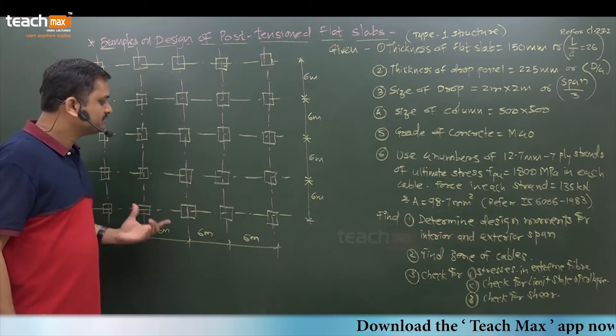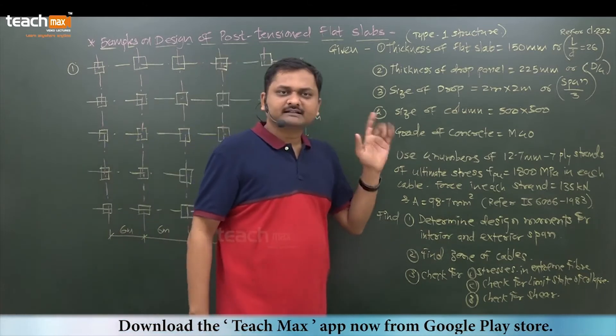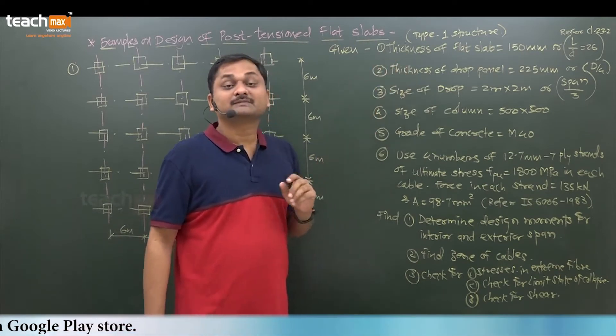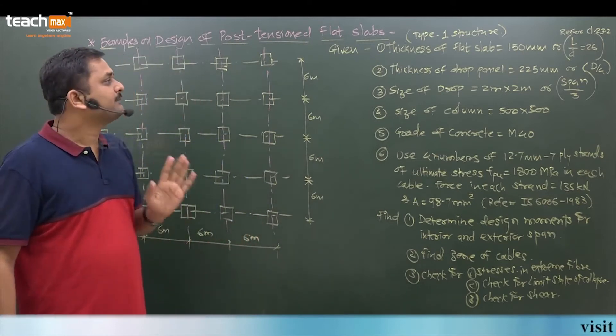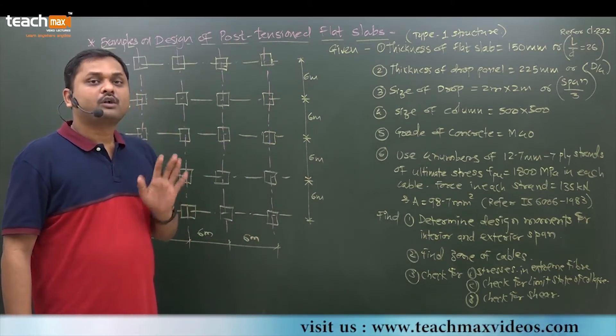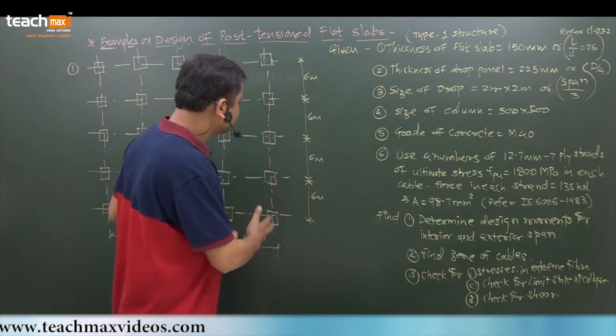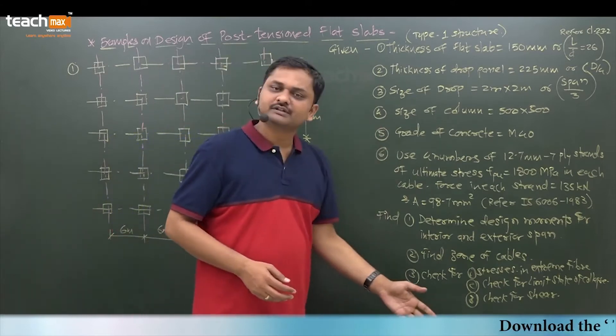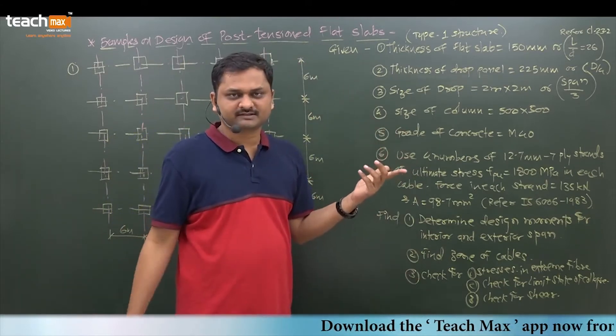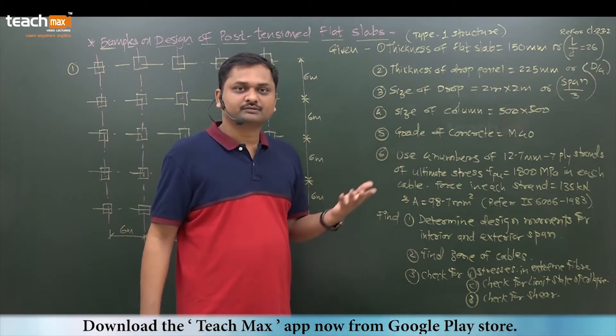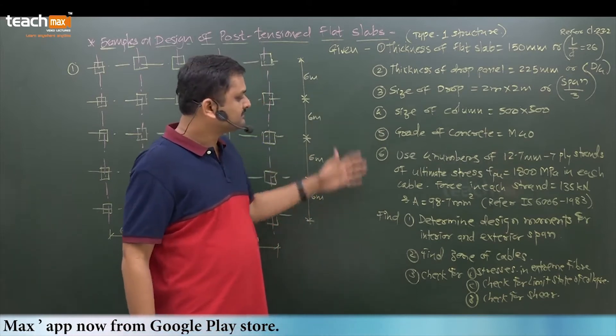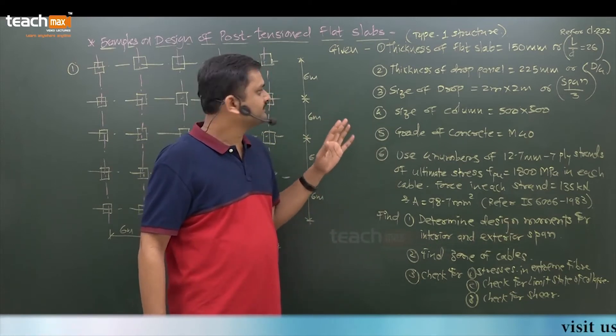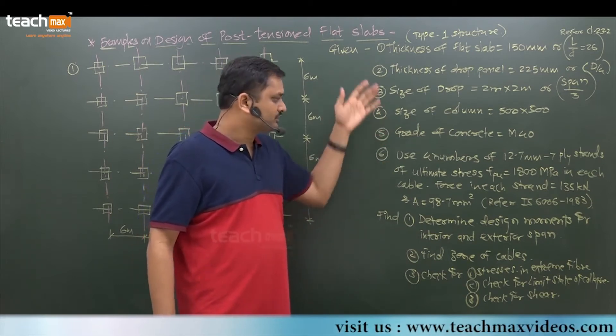This is the floor system given of 6 meter by 6 meter. The given data is: the structure we have to design is Type 1 structure. The thickness of the flat slab is given in this example as 150 mm. If not given, practically we select the size of the floor system only. Remaining things you need to assume or consider for the design. But in exam this is the given data. Size of the strands is definitely given to you. If not given in term work, you need to assume these all.